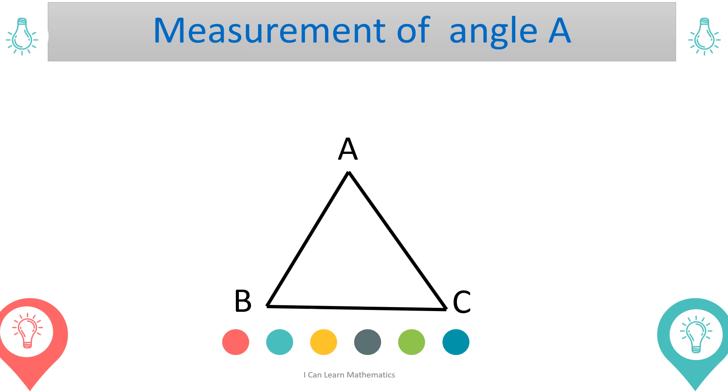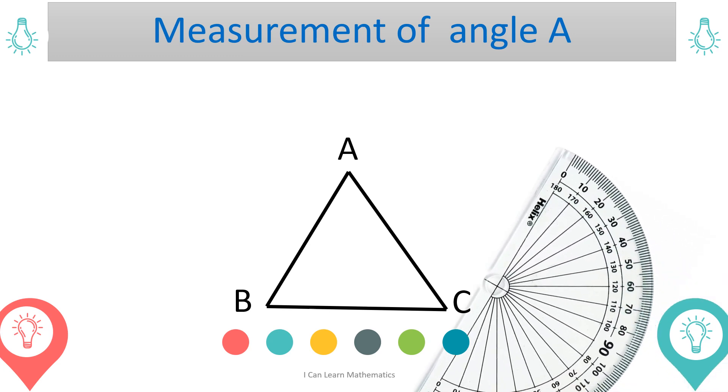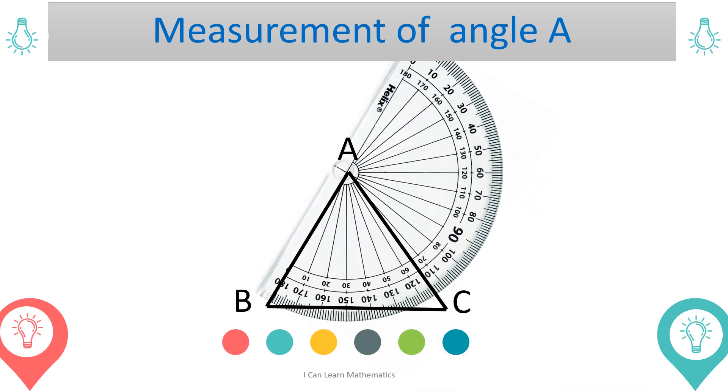You can also take the measurement of angle A this way. Here, you get the measurement of angle A as 65 degrees.